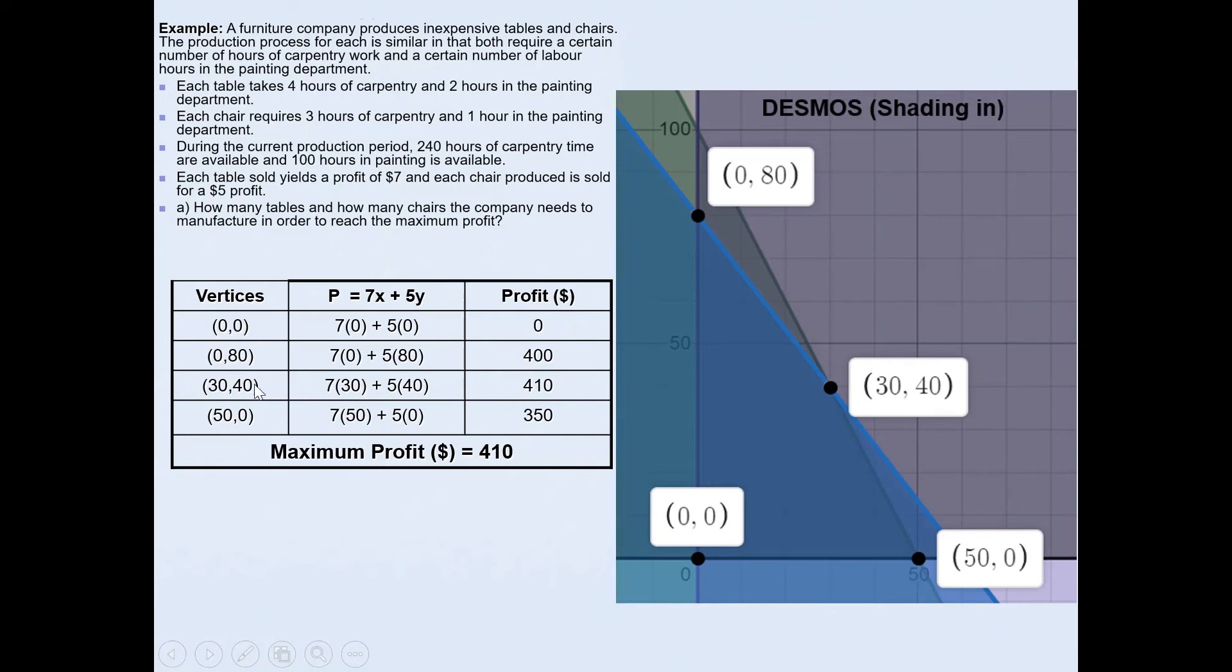Maximum profit is $410. The way we can obtain this is by having x value of 30 and y value of 40. Remember we have defined x as the number of tables that needs to be manufactured and the y value was defined as chairs. So we need to write a sentence describing that. A furniture company needs to manufacture 30 tables and 40 chairs. This will give them a maximum profit of $410.